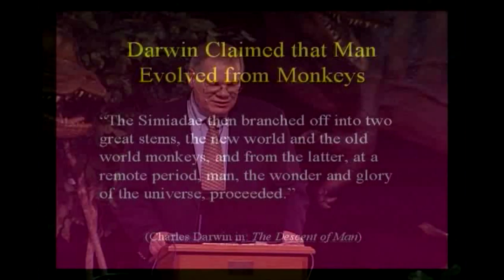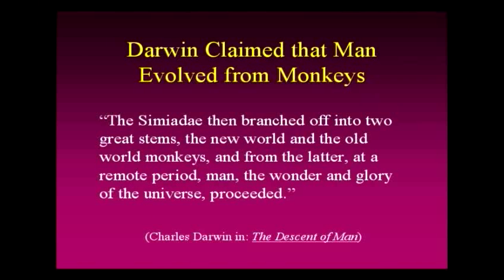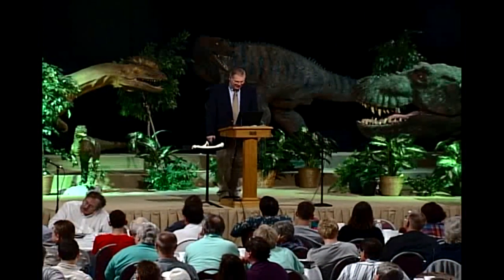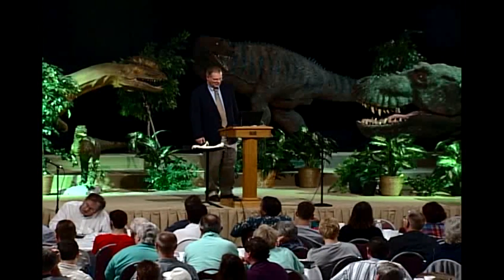Sometimes there's debate over this very starting premise. It was a debate at the time of the Scopes Trial whether Darwin really said that man came from monkeys or not. Today, if you say that Darwin claimed man came from monkeys, people will dispute that, saying evolution teaches that man came from ape-like creatures. An ape, by the way, is a monkey that doesn't have a tail. But Charles Darwin, in his book The Descent of Man, did say that the Simiidae branched off into two great stems — the new world and the old world monkeys — and from the latter, at a remote period of time, 'the wonder and the glory of the universe proceeded.' So don't let anybody tell you Darwin never claimed that man came from monkeys.